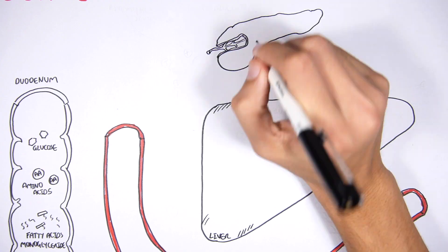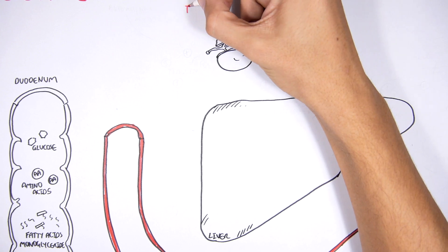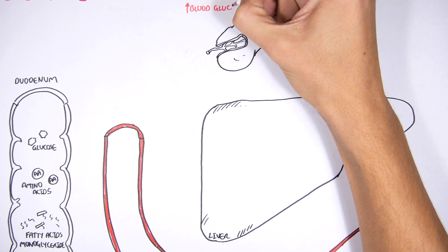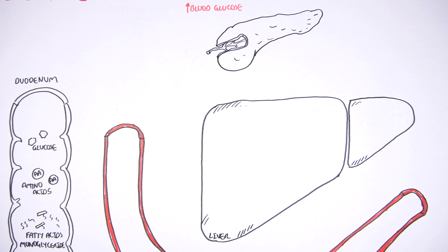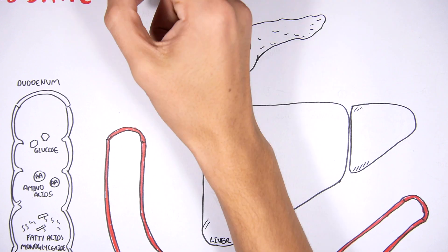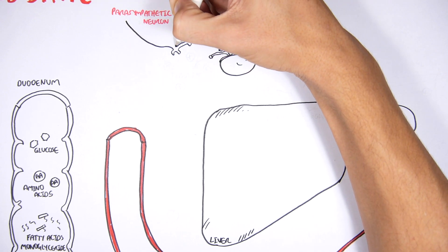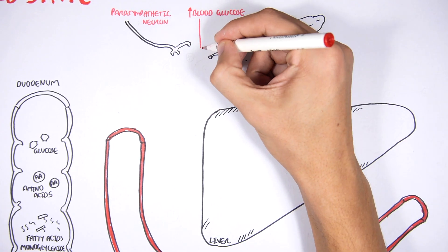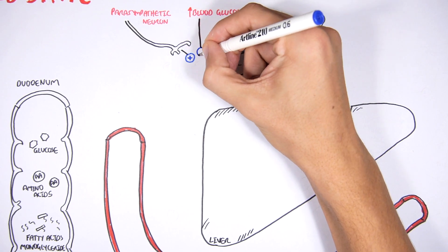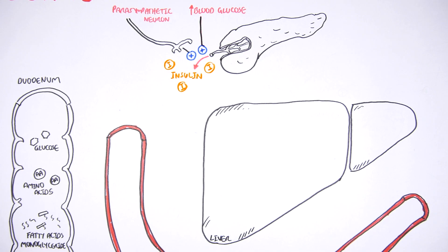Another important organ besides the liver is the pancreas, which is extremely important in metabolism. Just after we eat, there will be an increase in plasma glucose levels. An increase in blood glucose as well as the stimulation of the parasympathetic neuron will cause the pancreas to secrete a hormone called insulin, which is very important in the fed state.